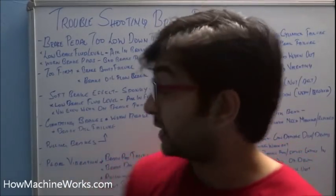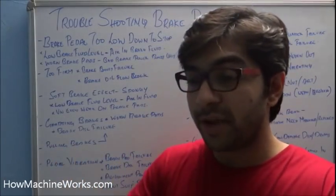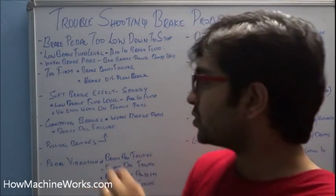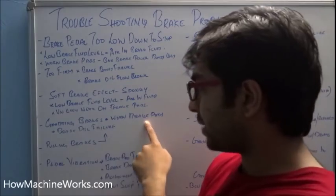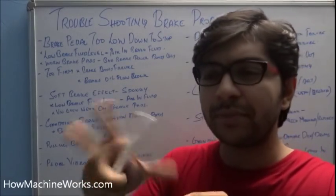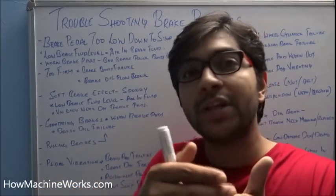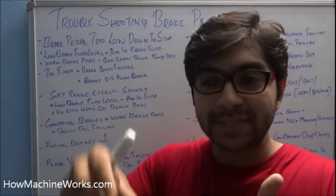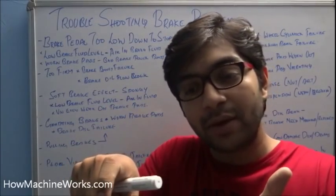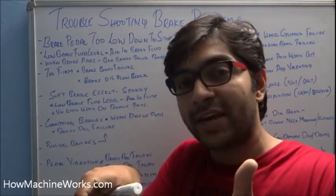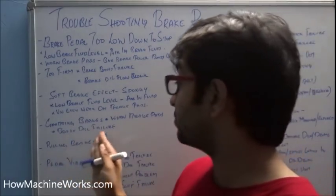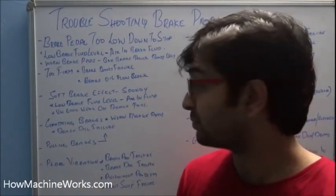The fifth problem is brake pulling — when braking, the vehicle steers towards one direction. This is also caused by worn brake pads or disc brake failure. One brake remains in effect while the other is fully released, so that single brake holds one tire and causes the vehicle to pull in that direction.